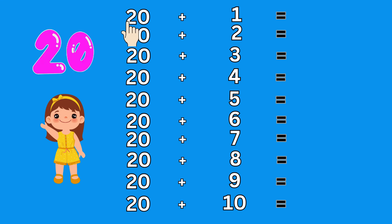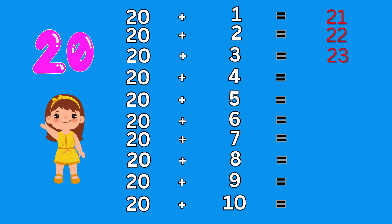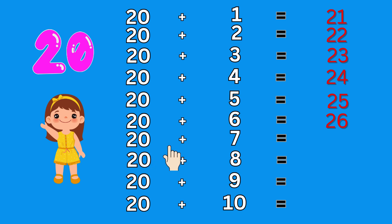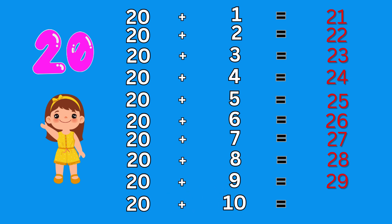Addition table 20. 20 plus 1 equal to 21. 20 plus 2 equal to 22. 20 plus 3 equal to 23. 20 plus 4 equal to 24. 20 plus 5 equal to 25. 20 plus 6 equal to 26. 20 plus 7 equal to 27. 20 plus 8 equal to 28. 20 plus 9 equal to 29. 20 plus 10 equal to 30.